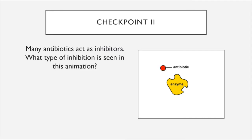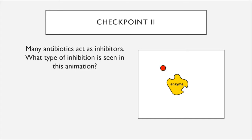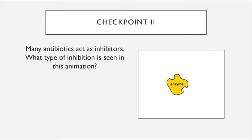Inhibition can also be useful in that we, as scientists, have discovered we can inhibit the ability of many bacterial enzymes to function properly by presenting them with special molecules that interact with either their active site or allosteric site. Many of our antibiotics are based upon this mechanism of inhibition. Looking at this animation, I want you to tell me whether you see competitive or non-competitive inhibition occurring.